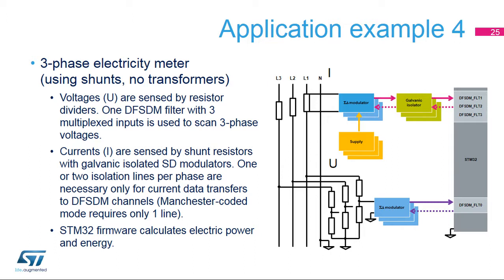Another example shows a three-phase electricity meter design using shunt resistors for sensing current, eliminating the need for expensive current transformers. Voltages are sensed by three resistor dividers and external sigma-delta modulators, and currents are sensed by three shunt resistors, each with one sigma-delta modulator. Because each sigma-delta modulator operates at a high-phase voltage, galvanic isolation is used for data transfers into the DFSDM. If the sigma-delta modulator uses the Manchester-coded serial protocol with an internal clock source, only one isolator per phase is necessary; if it uses the SPI serial format, two isolators per phase are necessary. Each sigma-delta modulator is powered from a separate DC supply voltage.